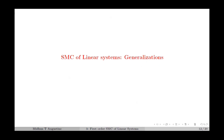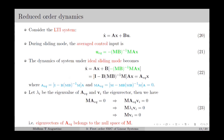Next we move on to the generalization of SMC for linear systems. We discuss the reduced order dynamics of LTI systems under SMC. Under SMC, the LTI system achieves reduced order dynamics. Consider an LTI system as given in equation number 20. During sliding mode, the equivalent control input is as given in equation number 21, obtained by solving S-dot equal to 0 with the system dynamics. Substituting u_eq instead of u gives x-dot equal to A_eq times x, where A_eq equals the corresponding expression. Computing M times A_eq shows that the MB and (MB)⁻¹ terms cancel, leaving M minus M times A, which equals zero.